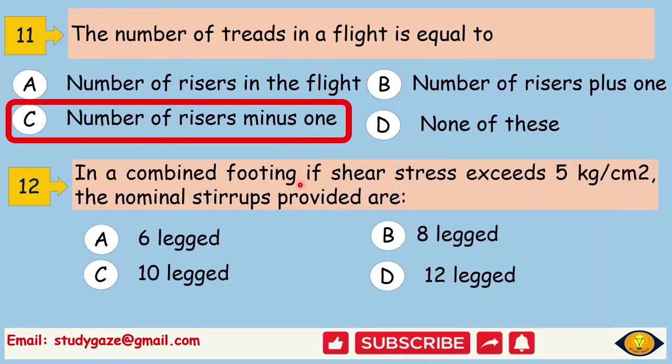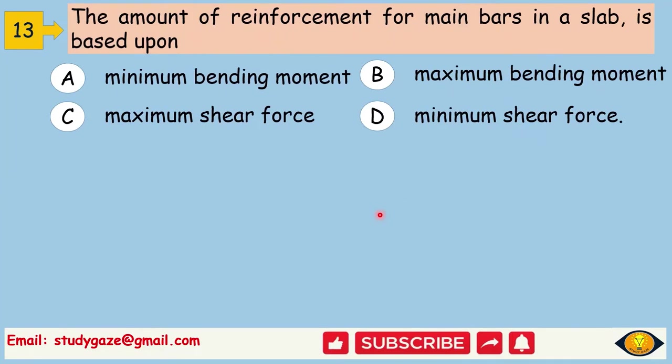In a combined footing, if shear stress exceeds 5 kg per centimeter square, the nominal stirrups provided are. Answer is 12-legged. The amount of reinforcement for main bars in a slab is based upon. Answer is maximum bending moment.